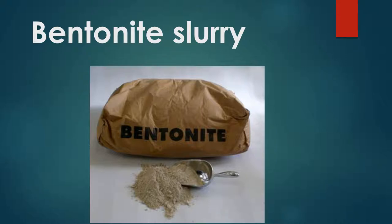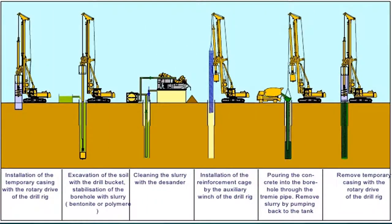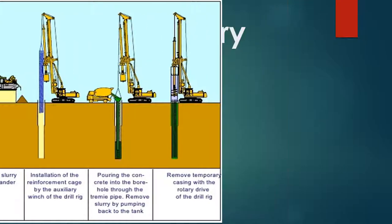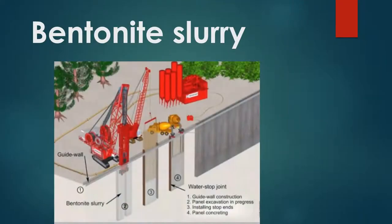Bentonite slurry is a common type of soil stabilizing liquid. Bentonite is used to stabilize the soil for deep foundations such as cast in situ piles during the drilling stage. It is also commonly used for stabilizing the drilled soil for the diaphragm wall.